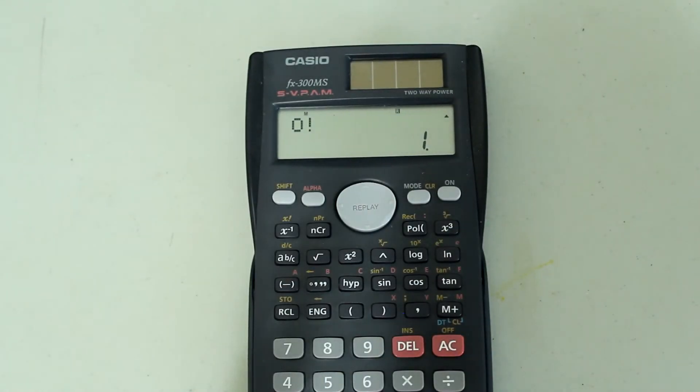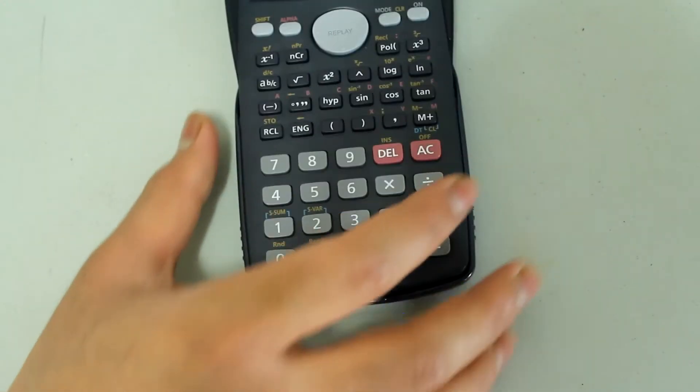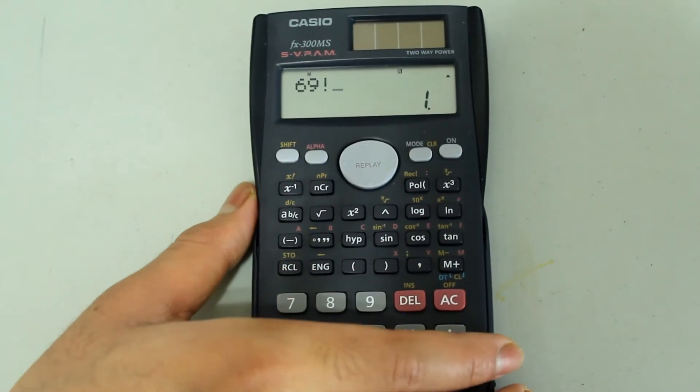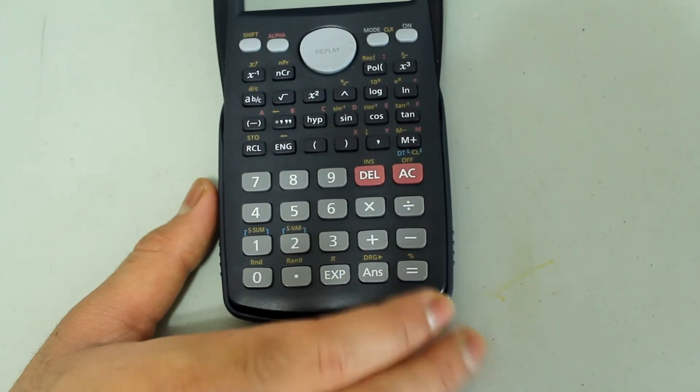We wouldn't be able to do that without the factorial feature. An important thing to keep in mind is that these factorial calculations can get quite large. And there is a limit to what the calculator can handle and display. If I type in 69 and then press shift and the x to the negative 1 button, 69 factorial, and press equals, I get an answer.